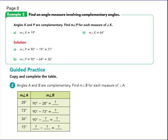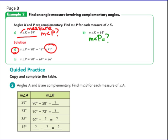Now let's find an angle measure involving complementary angles. Angles K and P are complementary — they're only giving you one of them. If the measure of angle K is 19 degrees, what is the measure of angle P? P must be 90 minus 19, so P is 71 degrees. If K is 64 degrees, what is the complement? 90 take away 64 — P must be 26 degrees. So you're finding the complement of an angle.